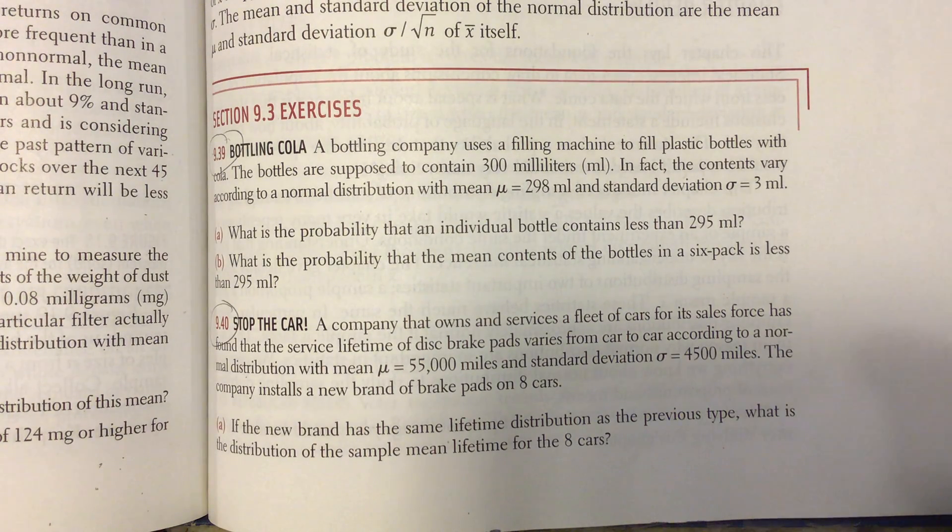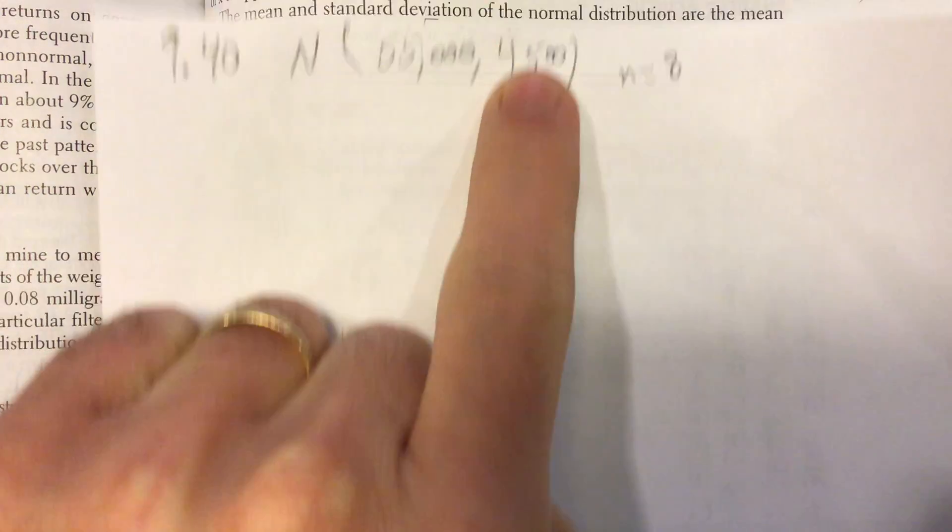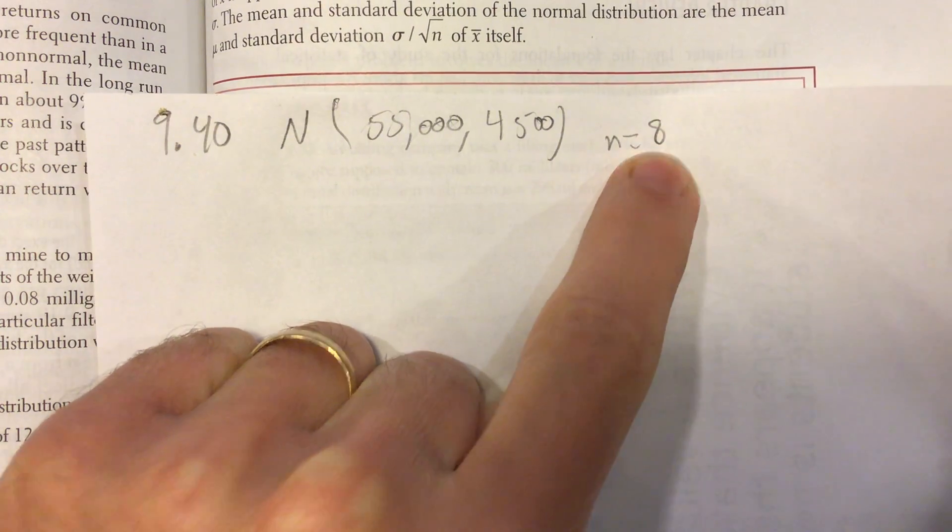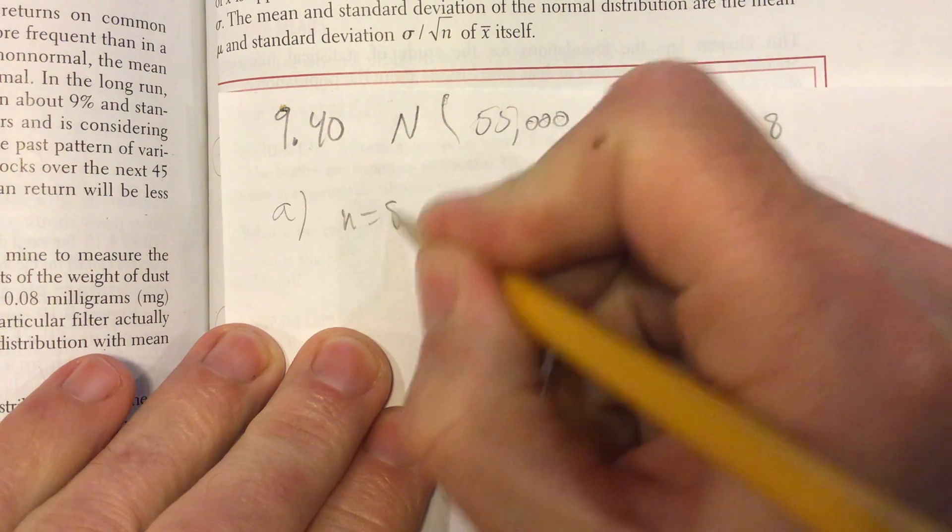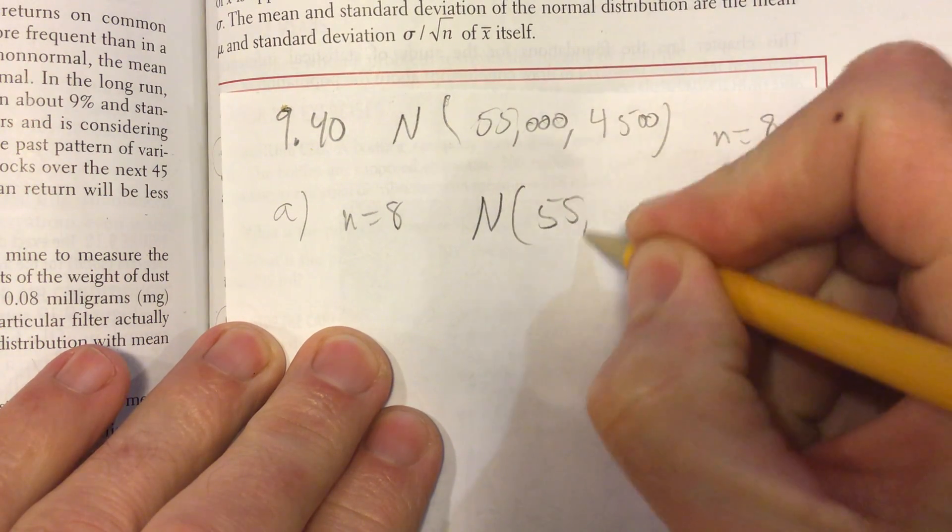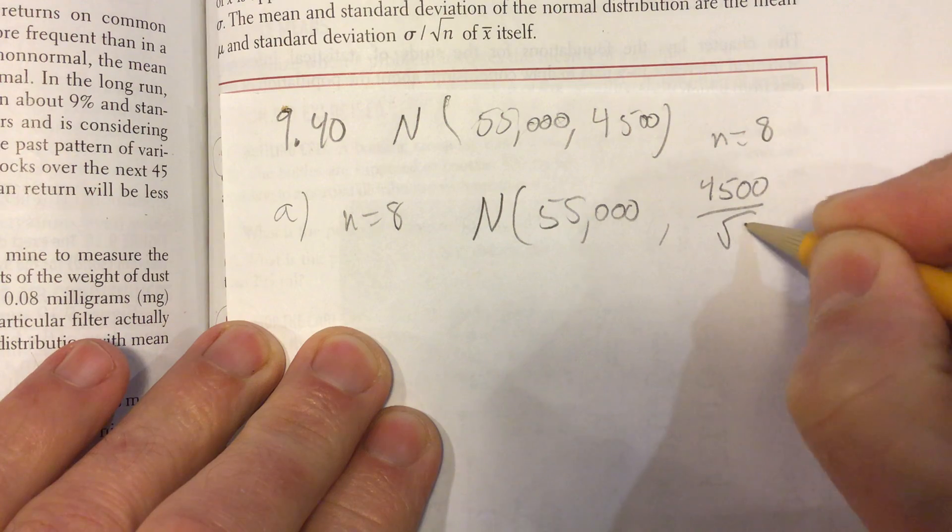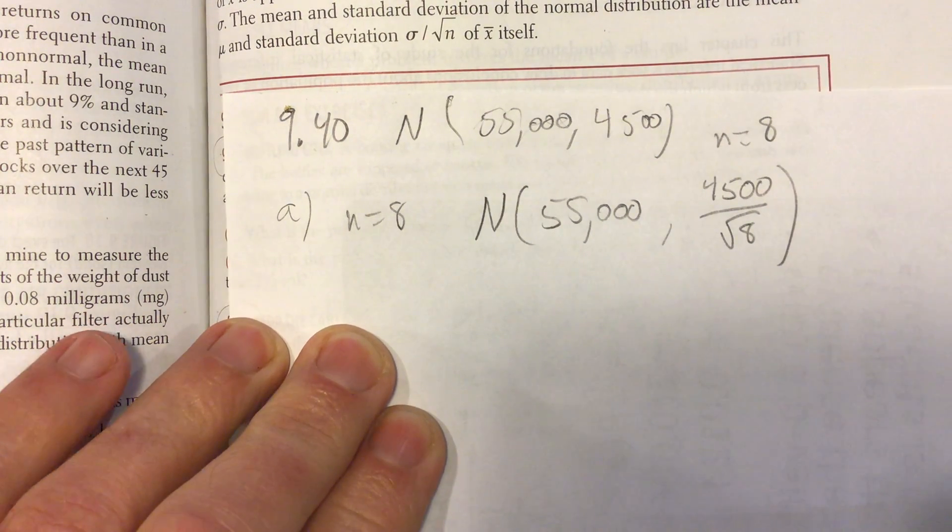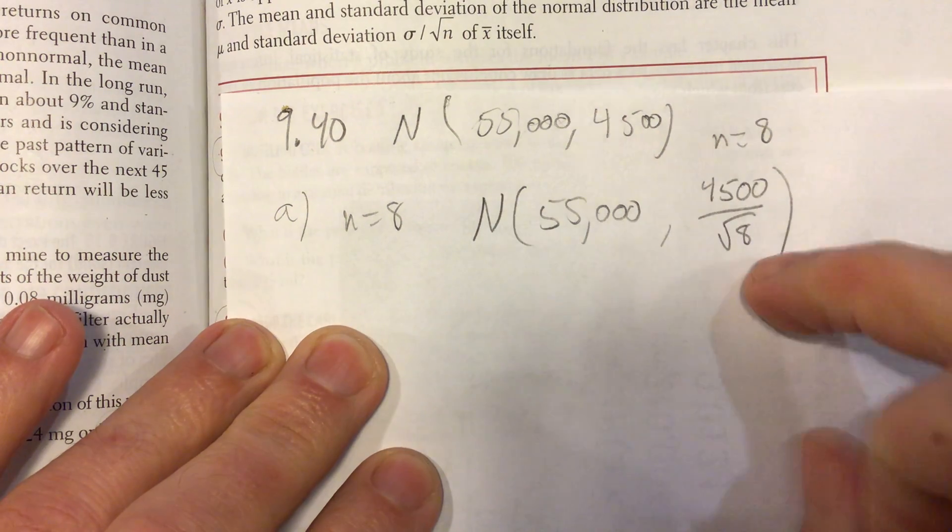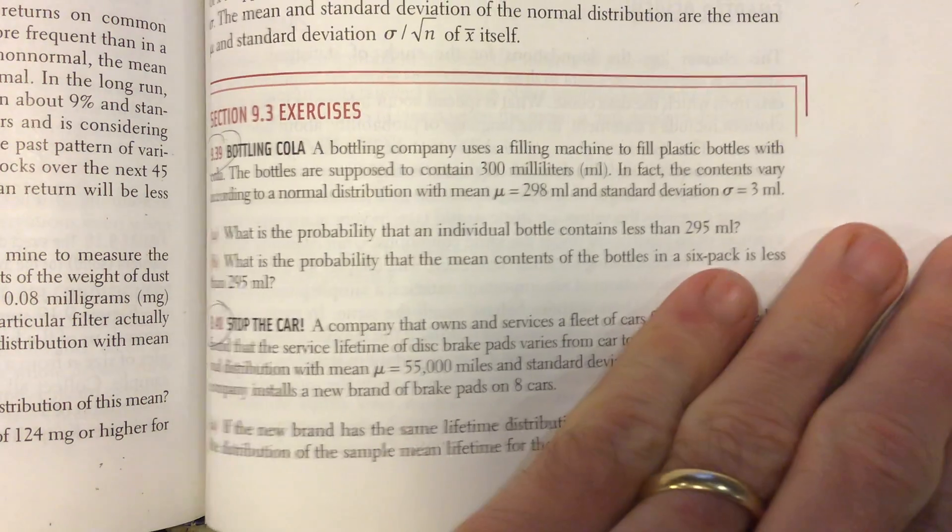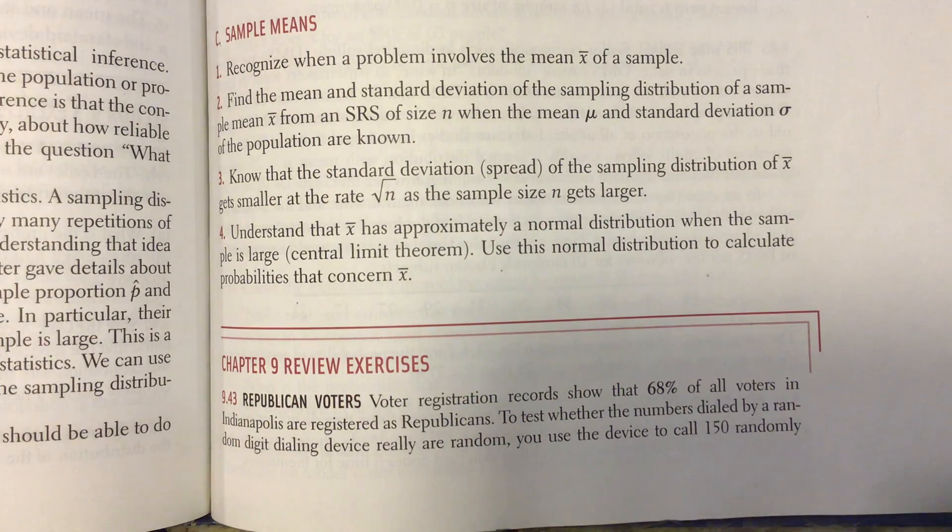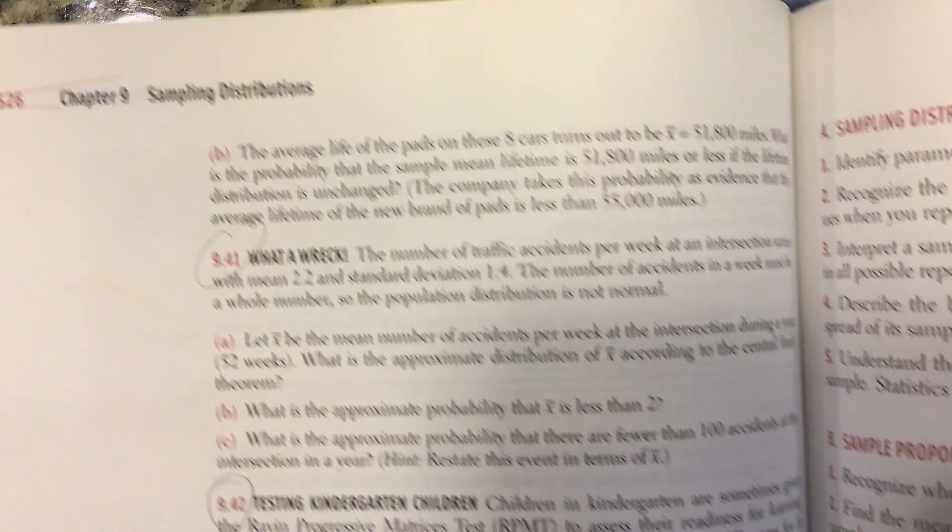If the new brand has the same lifetime distribution as the previous type, what is the distribution of the sample mean lifetime for the eight cars? That's a piece of cake. All you got to do is adjust your standard deviation by the sample size. So when n equals 8, our distribution would still be normal, and our standard deviation would be 4500 over the square root of 8. And again, in order to use that formula, they have to have at least 80 cars. I would assume they do if they have this kind of data.